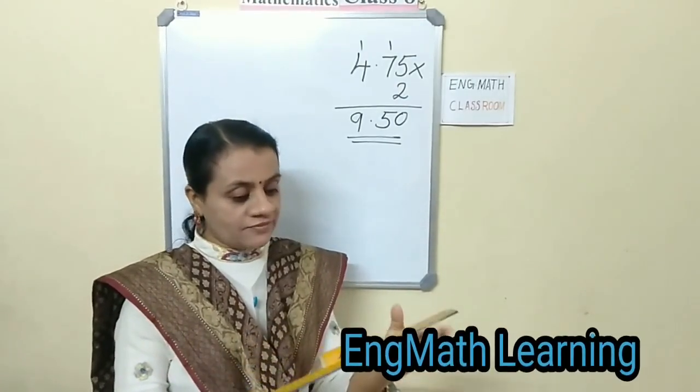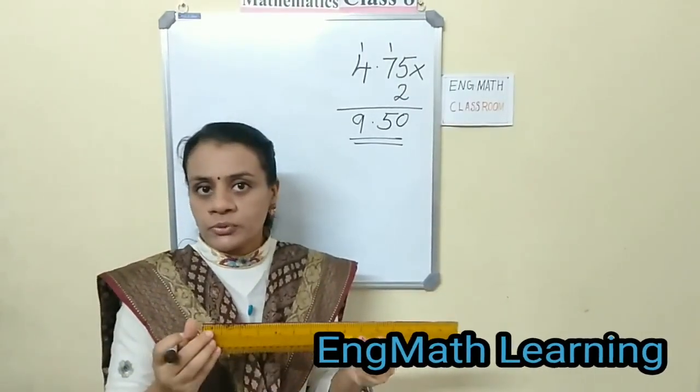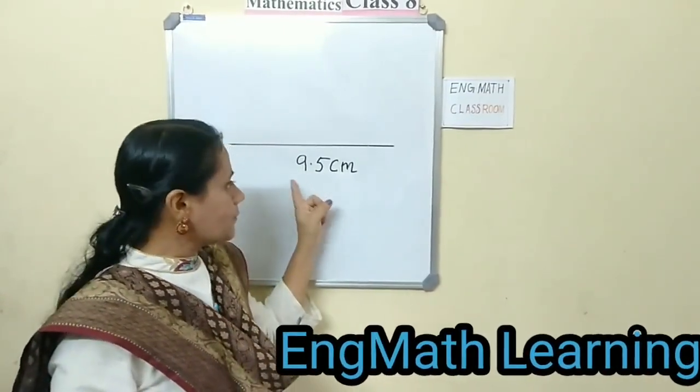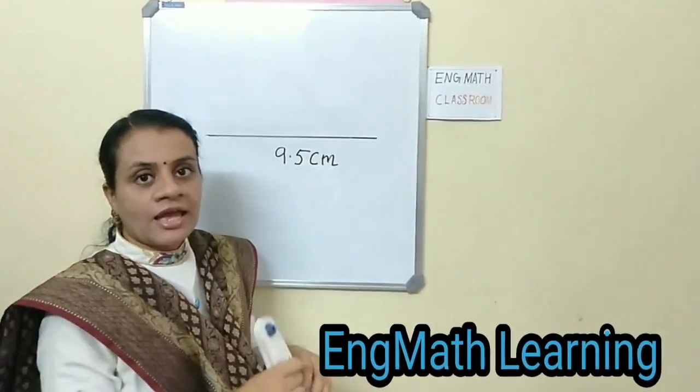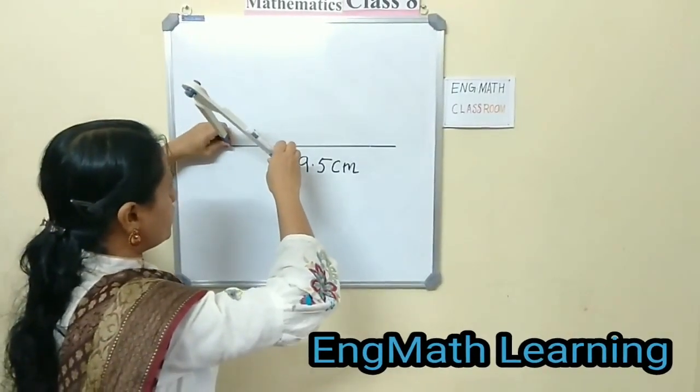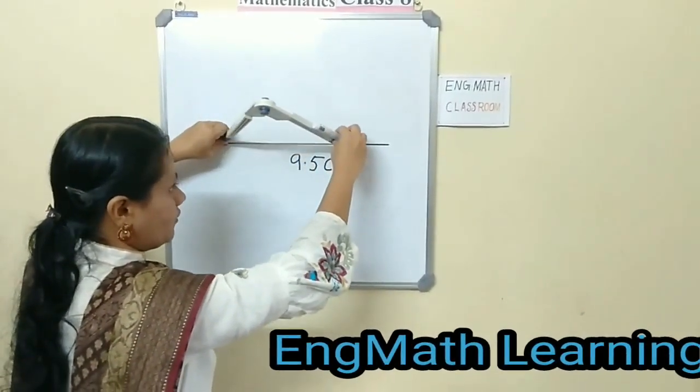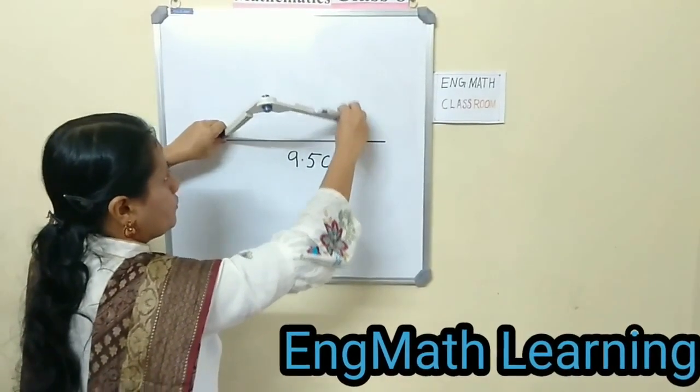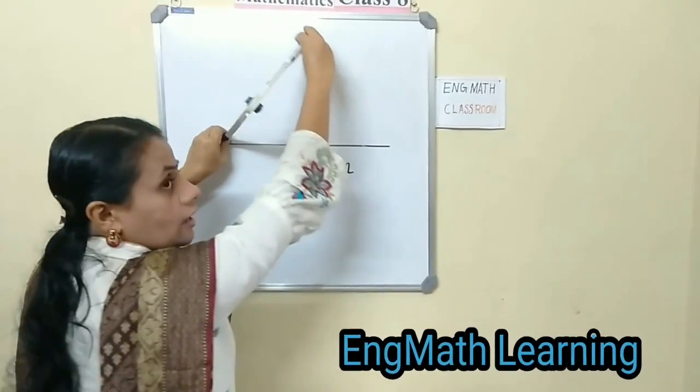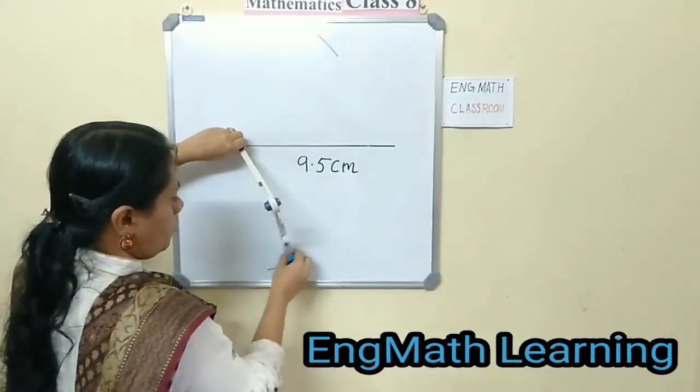That is easy to take from the ruler. Now draw a line of length 9.5 cm and draw perpendicular bisector. Keeping the compass at one endpoint, take some distance and cut an arc.